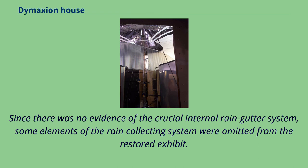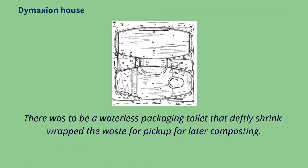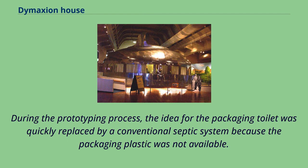Since there was no evidence of the crucial internal rain gutter system, some elements of the rain collecting system were omitted from the restored exhibit. The roof was designed to wick water inside and drip into the rain gutter and then to the cistern, rather than have a difficult-to-fit, perfectly waterproof roof. There was to be a waterless packaging toilet that shrink-wrapped the waste for pickup for later composting. During the prototyping process, the idea for the packaging toilet was quickly replaced by a conventional septic system because the packaging plastic was not available.